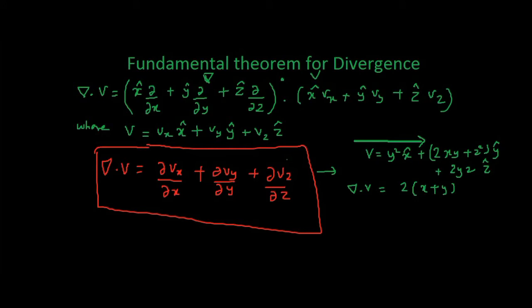Now let us see what is the geometrical interpretation of divergence of a vector. For example, I have a vector V which is equal to y-squared times x-cap plus (2xy + z-squared) times y-cap plus 2yz times z-cap. This is my vector V. If you apply the divergence formula on this V, you get the answer 2 times (x + y). So, the divergence of this vector is a scalar value which is 2(x + y).